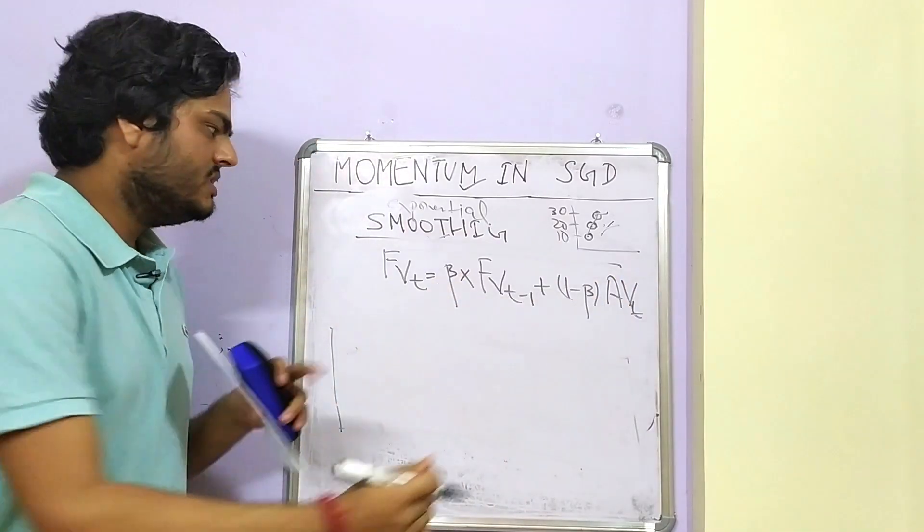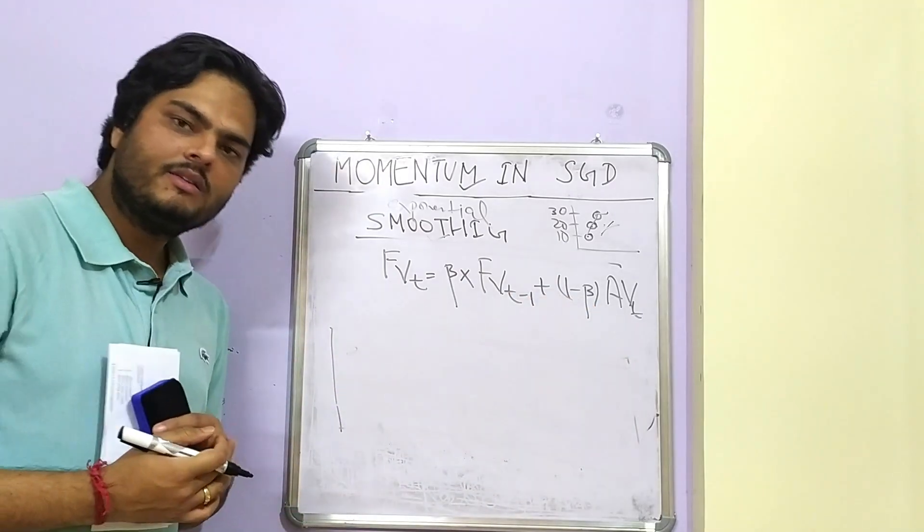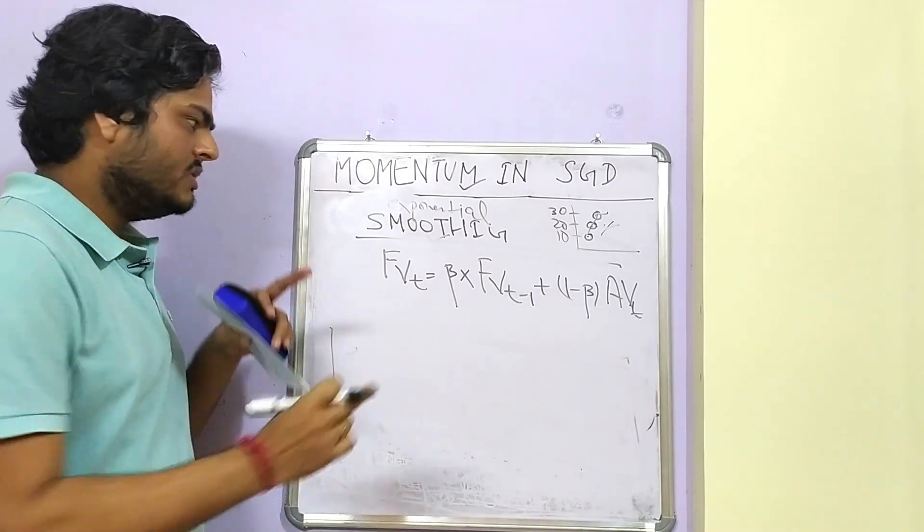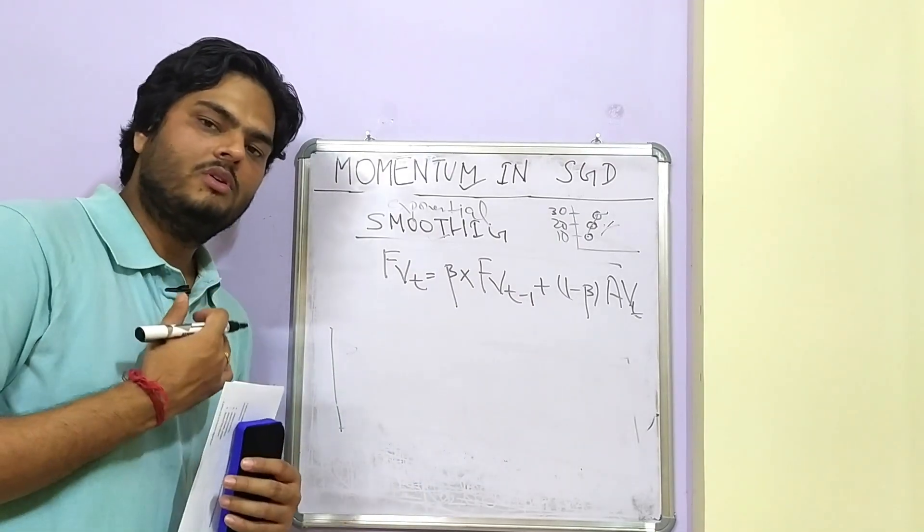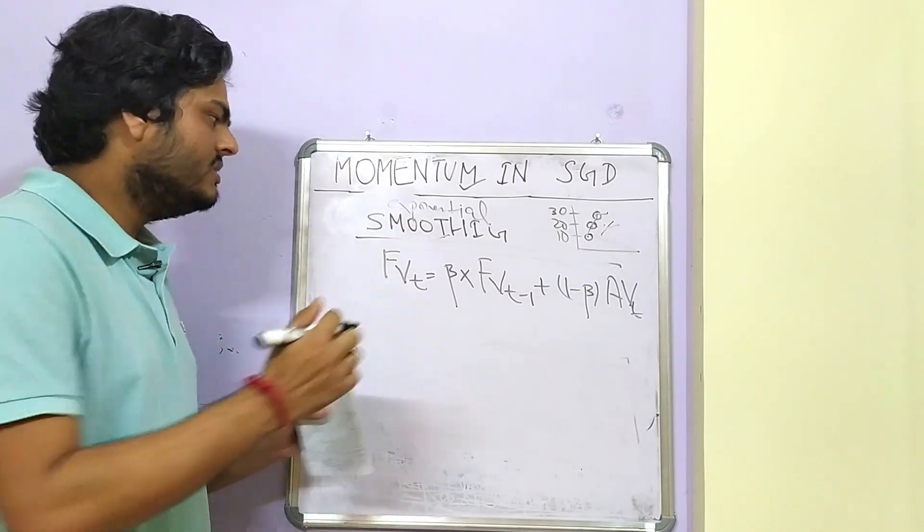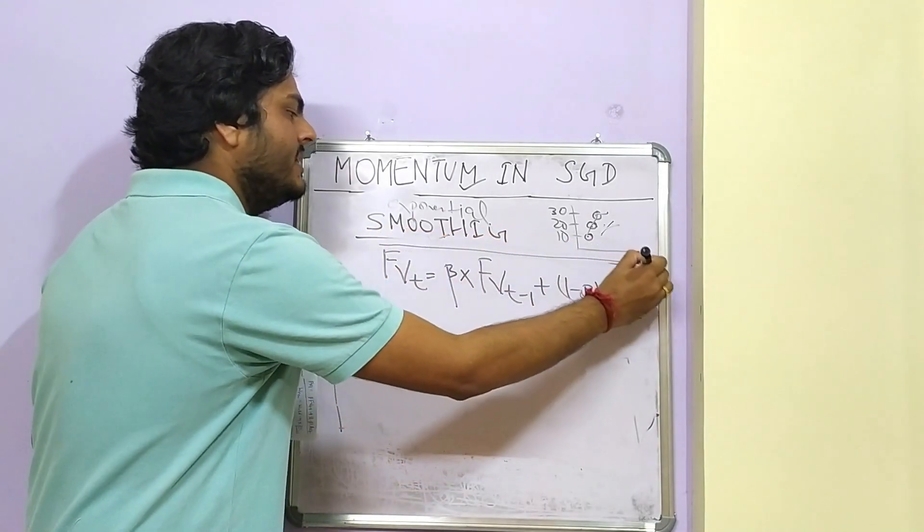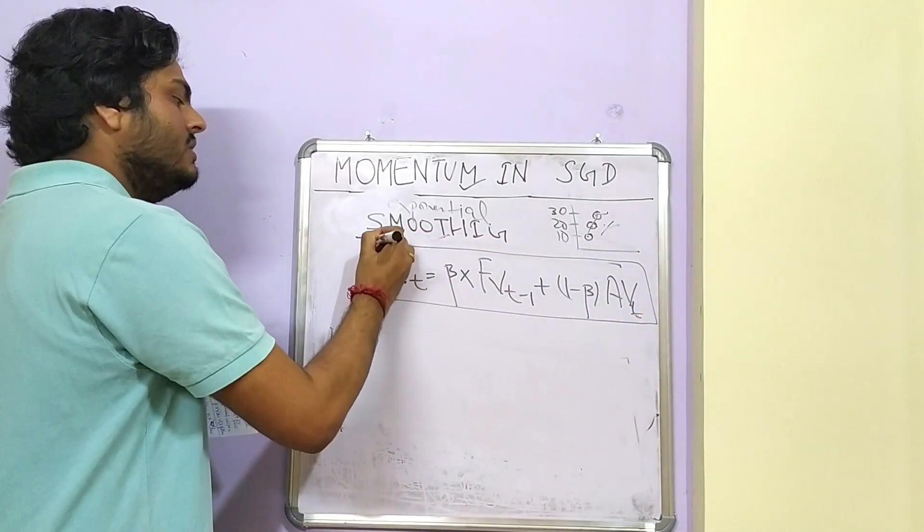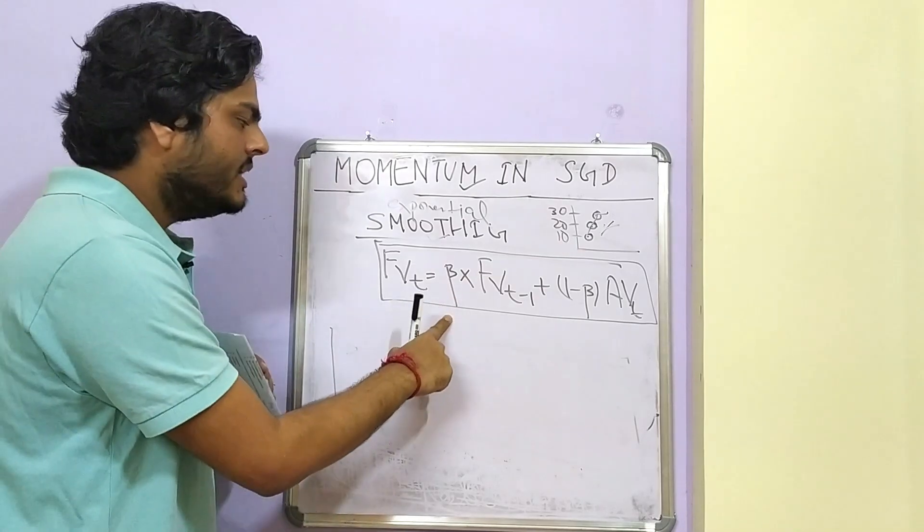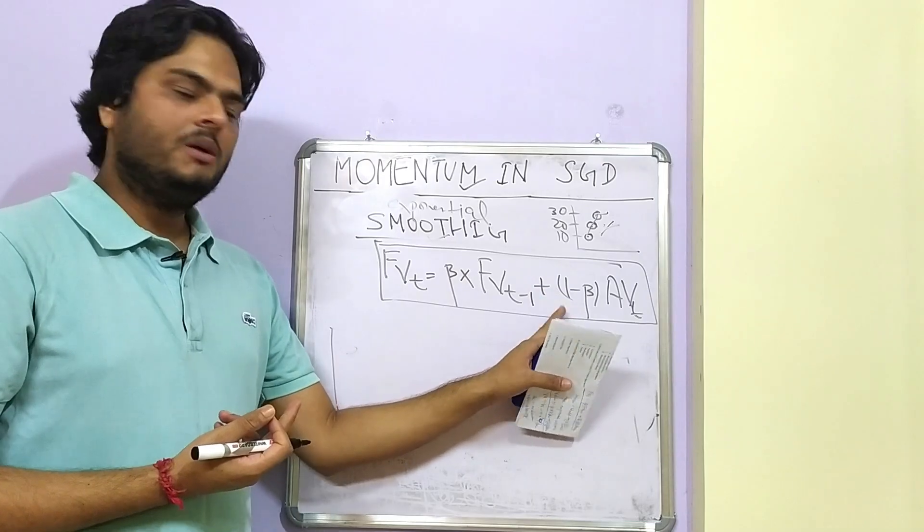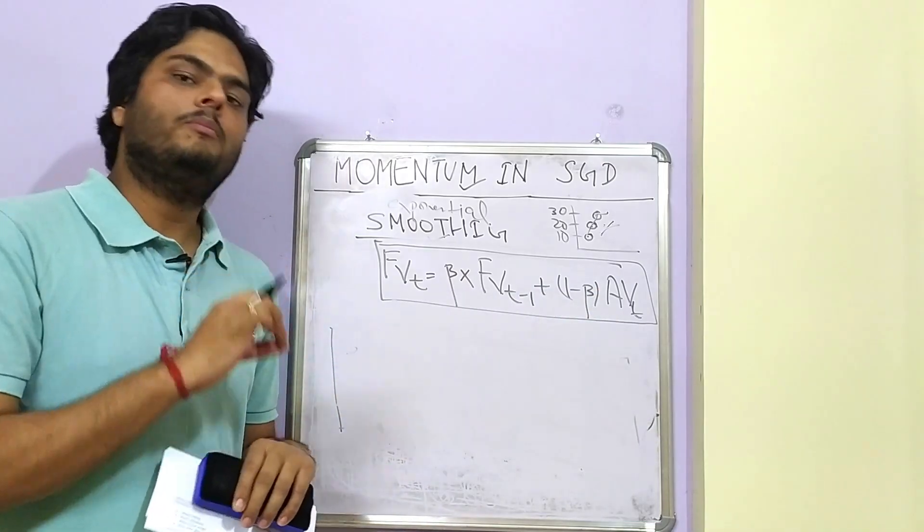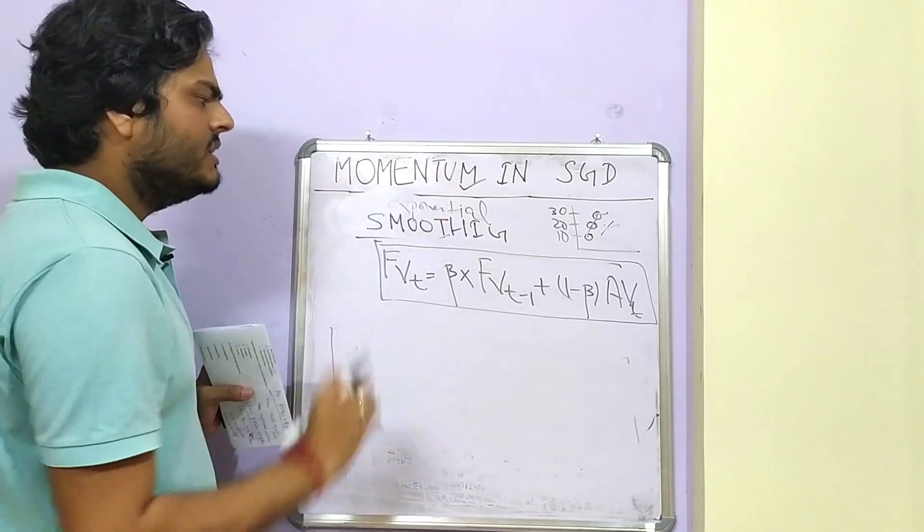What we do in exponential smoothing is we just take forecasted value. Forecasted value at time t will be beta which is a constant multiplied by forecasted value at time t minus 1 plus 1 minus beta times actual value at time t. Now, if you see this equation carefully, forecasted value - what was forecasted value in my previous example? The smoothened values.